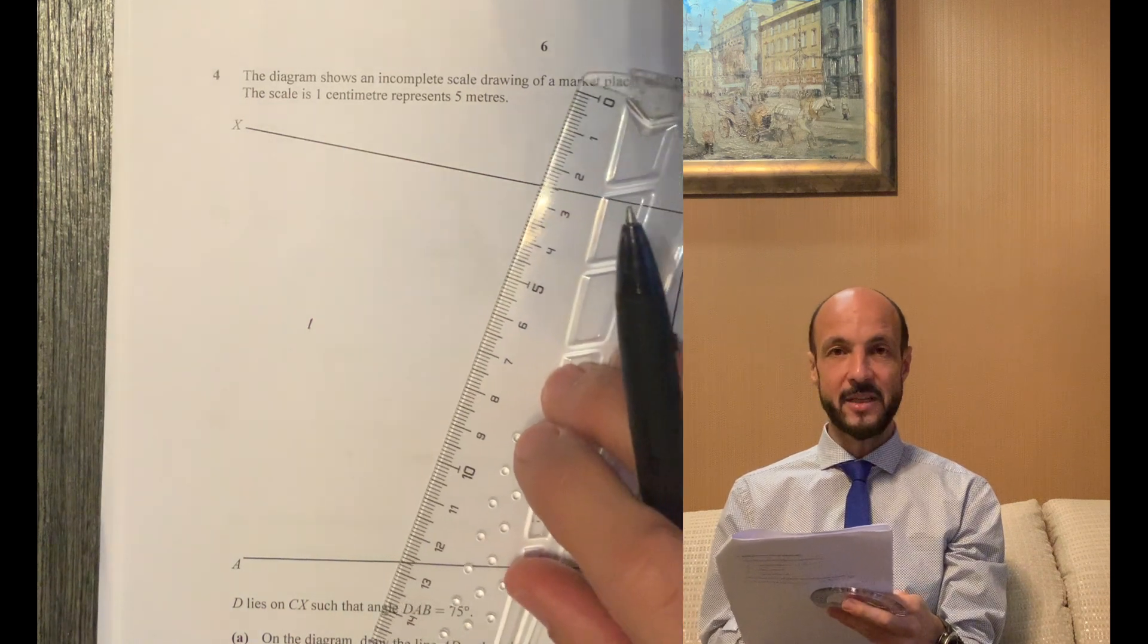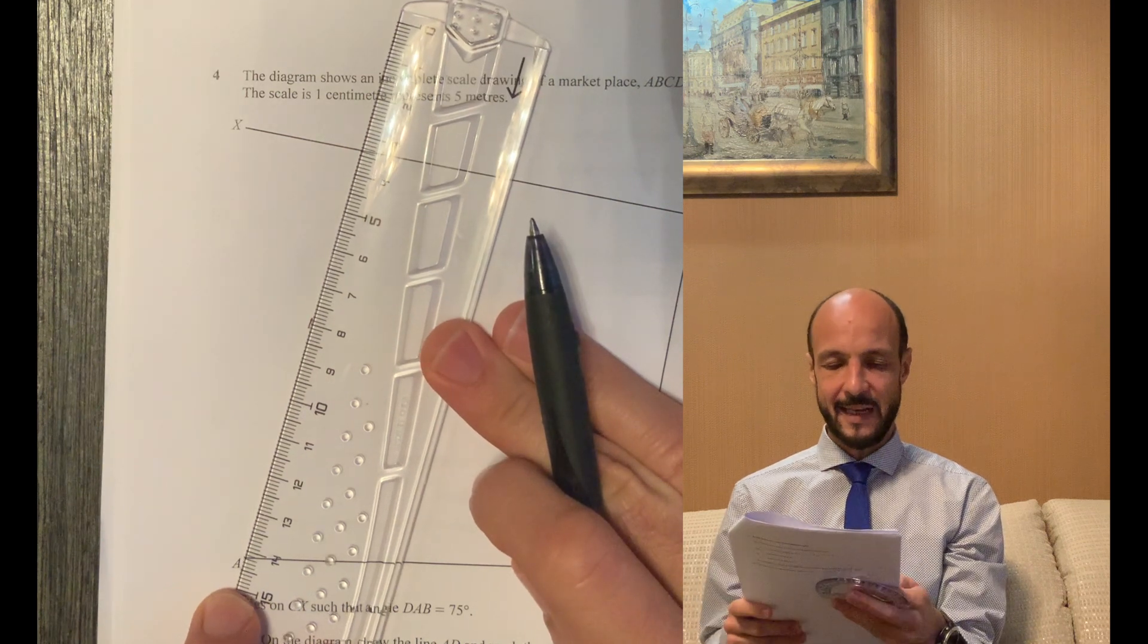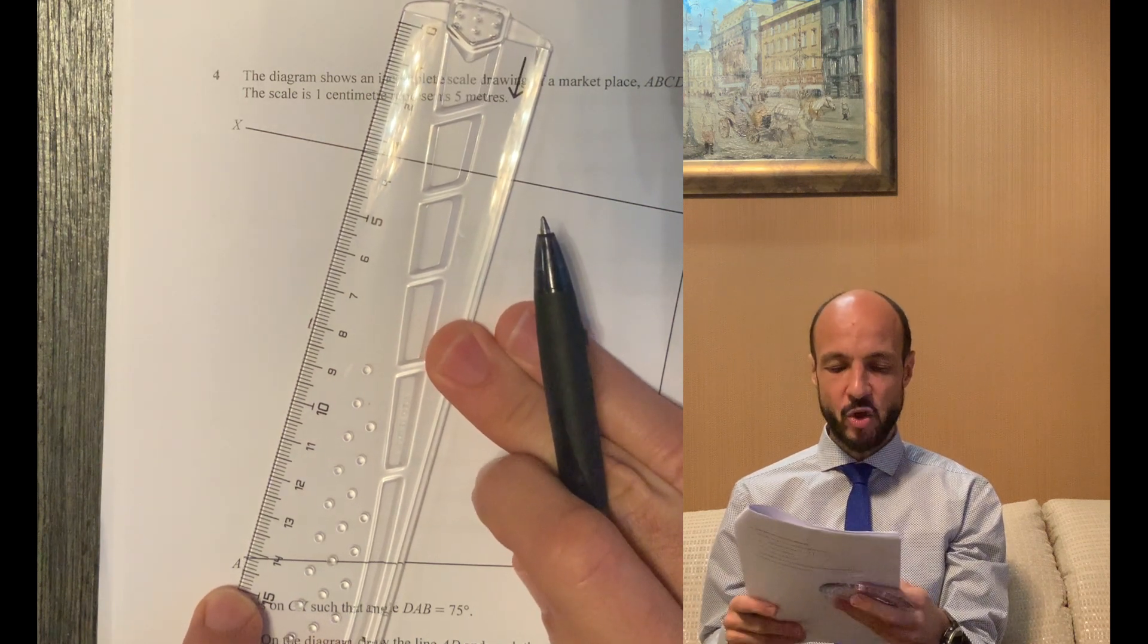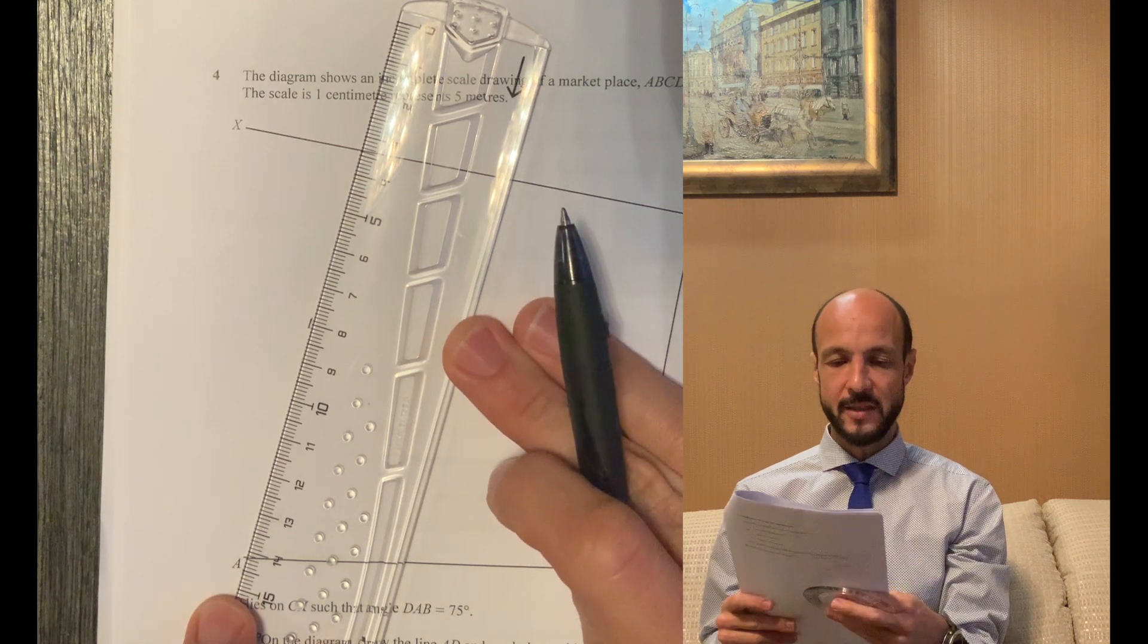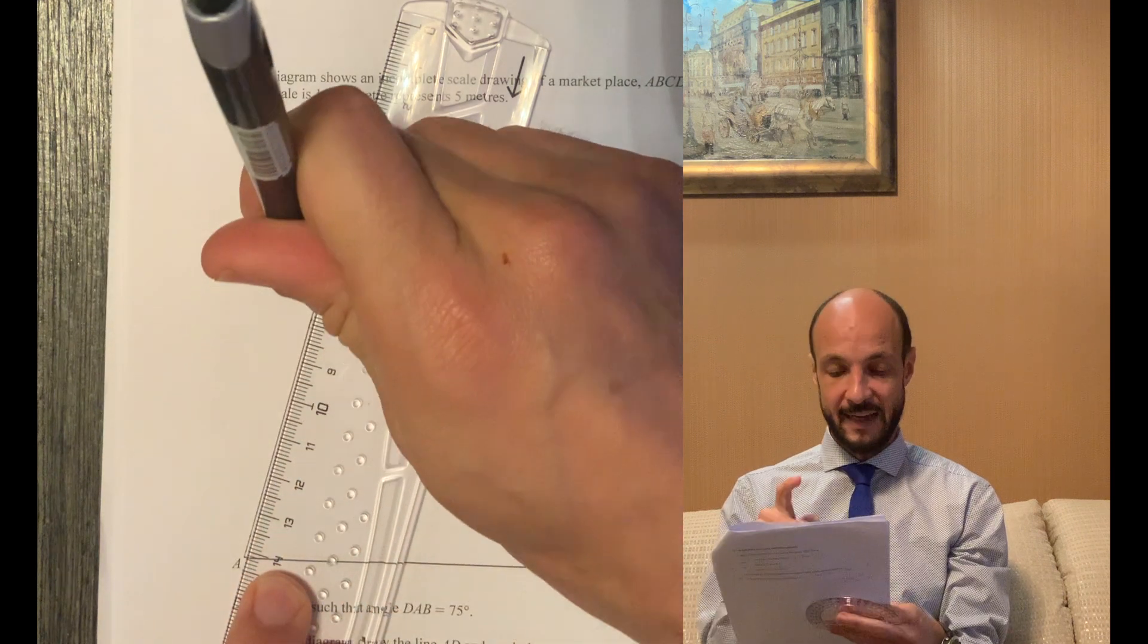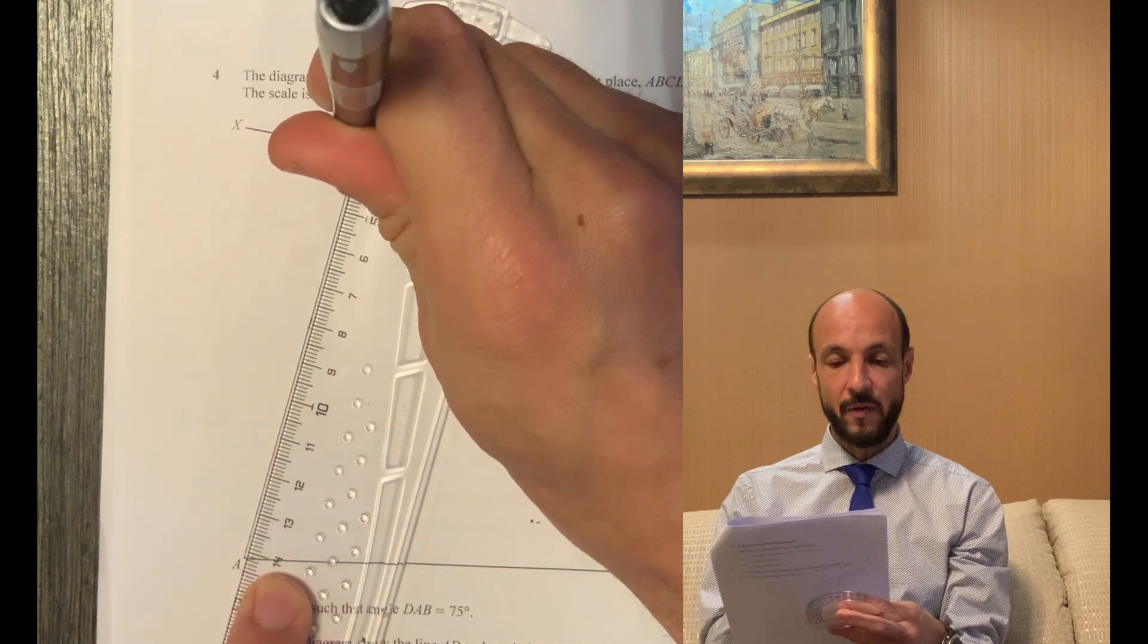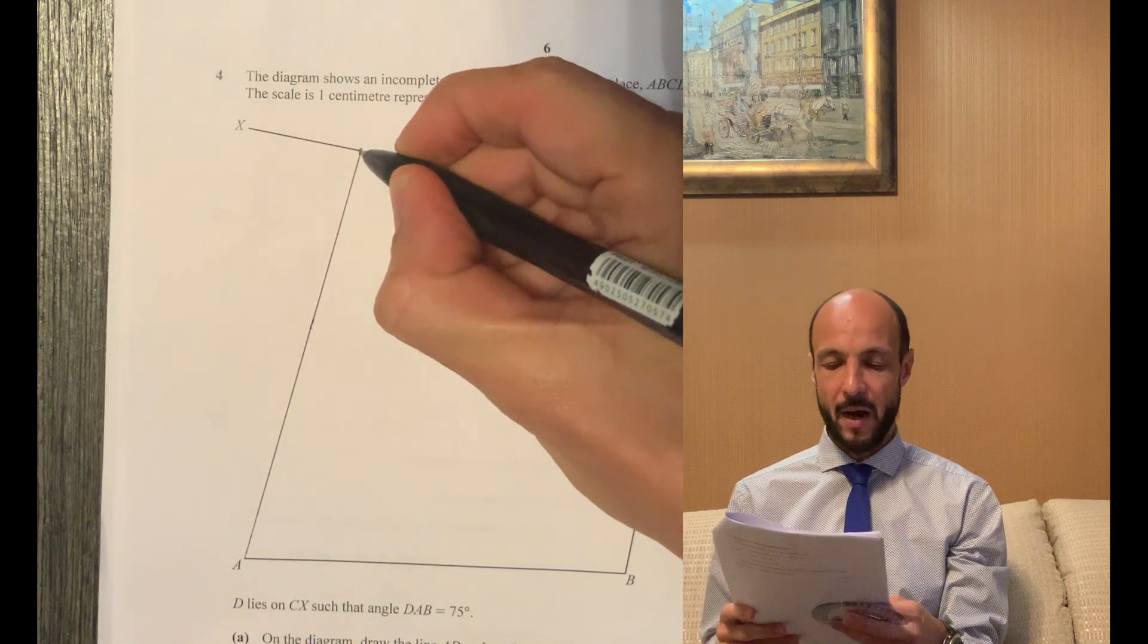Remember the examiner is going to be having a lot of scripts and wants to find it very quickly. So we mark the point as clearly as we can and then we join up the line from A through that point. We must make sure that it goes as far as the line CX and we must mark on that point where it hits CX as D because the question specifically said mark the position of D.